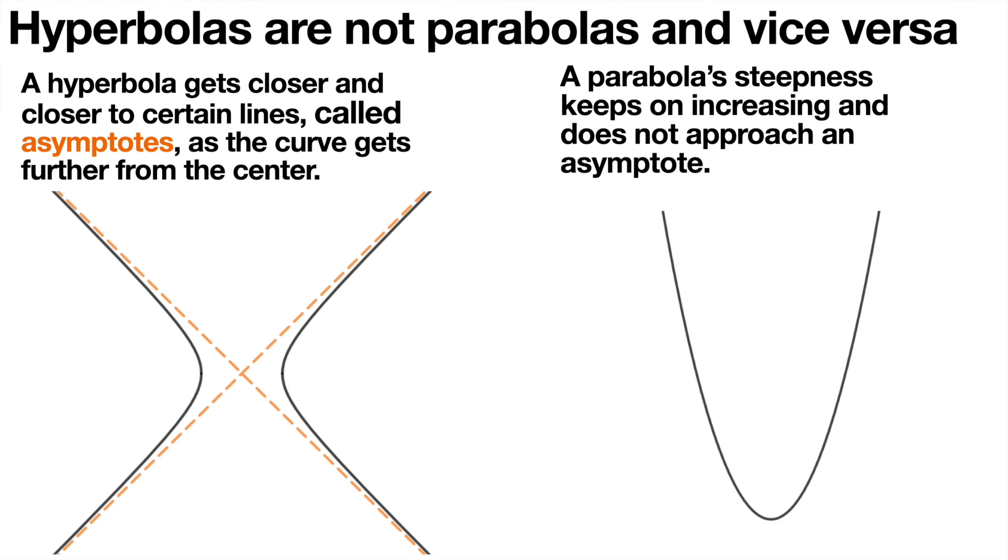So this is the main way in which a hyperbola is not the same as a parabola and vice versa. A hyperbola gets closer and closer to certain lines called asymptotes as the curve gets further and further away from the center. But a parabola steepness keeps on increasing and does not approach an asymptote. You might want to think about how we can argue this more rigorously.